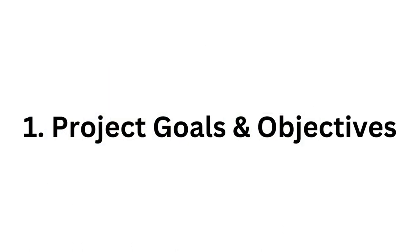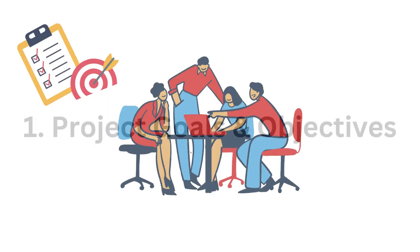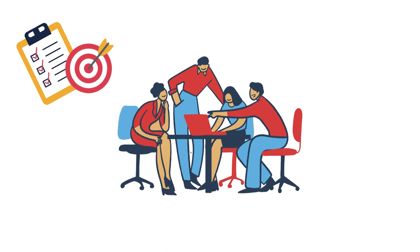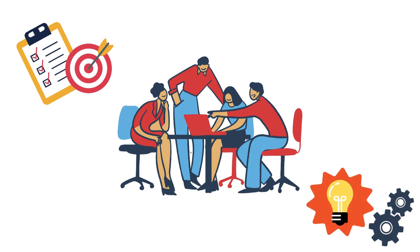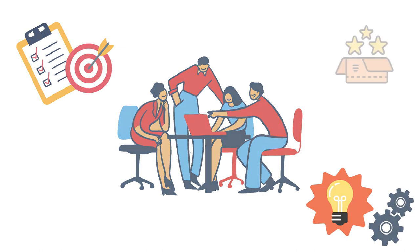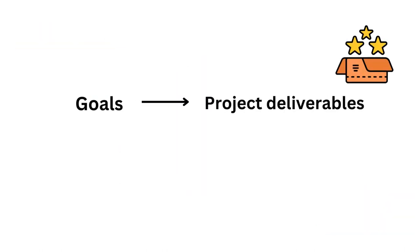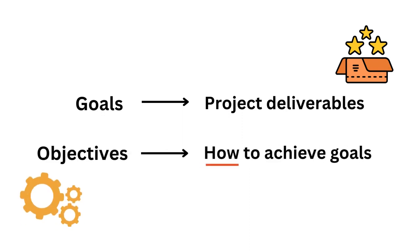Project goals and objectives. Discuss with your group about project goals and objectives. Discussing these can help in deciding how to approach the project and what deliverables your group wants to produce. Project goals usually directly correspond with project deliverables, while objectives discuss how the group plans to achieve these goals.